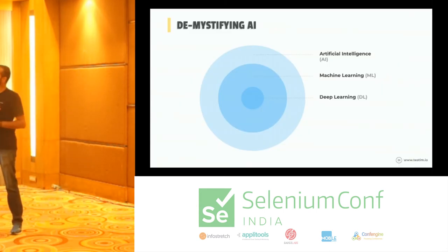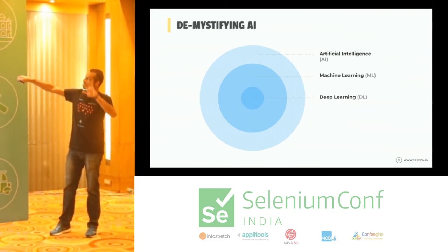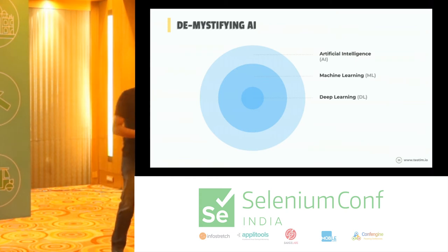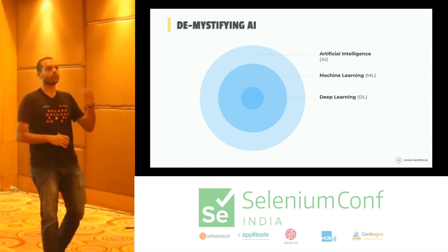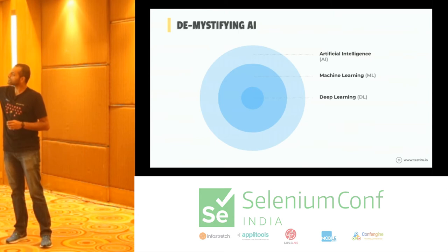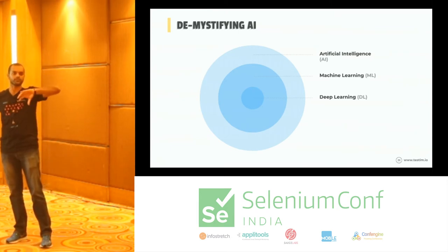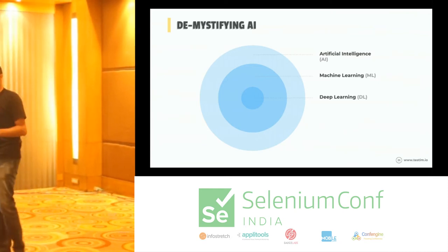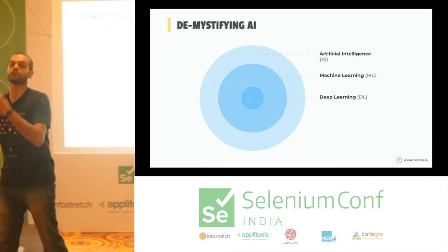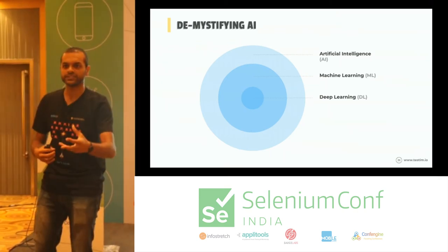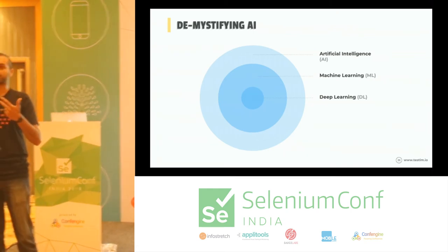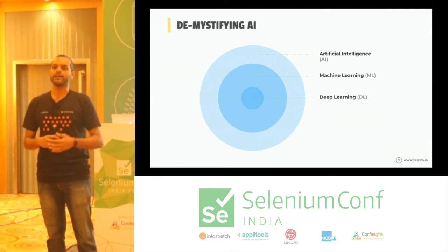Think of a large outer circle called artificial intelligence — giving machines the ability to work and react like human beings. Under AI, you have machine learning, which is a subset. Machine learning is the field of study that gives machines the ability to learn without being explicitly programmed. It evolved from the study of computational theory, learning algorithms, and pattern recognition.